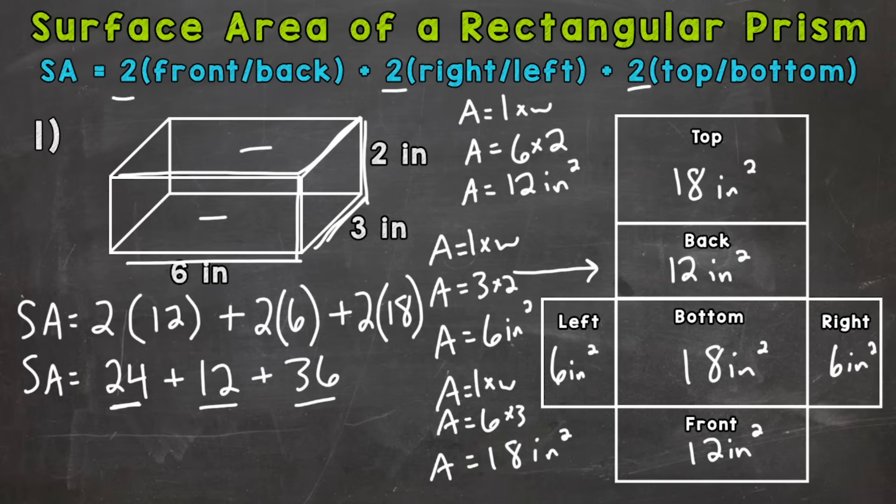So we have all of our faces included. Now we just need to add everything together. So surface area equals 24 plus 12 is 36. Plus 36 gives us an answer of 72 square inches. So that's the area of all of the faces added together.